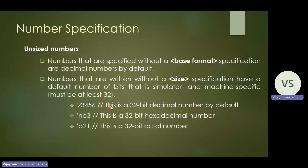For example, '23456' is a decimal number — we don't mention the base format 'd' or the size. Since there are five digits, we do not specify a size. By default, it is understood as a 32-bit decimal value.